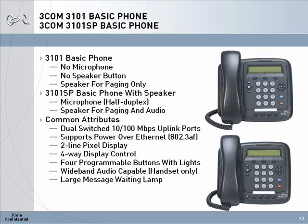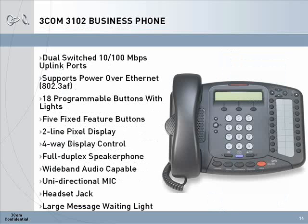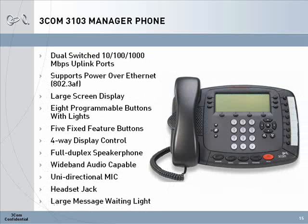The 3Com 3101 basic phone comes in two models: either with a half-duplex speakerphone or with a listen-only speakerphone. The phone has a two-line display and four programmable buttons. The 3101 phone has a 10/100 switch built in, which allows for a PC to be connected through the switch port on the phone using only a single Ethernet connection. The 3102 business phone features a full-duplex speakerphone, 18 programmable buttons, a two-line display, and a built-in amplified headset port. The 3102 phone also has a 10/100 switch built in for PC connectivity.